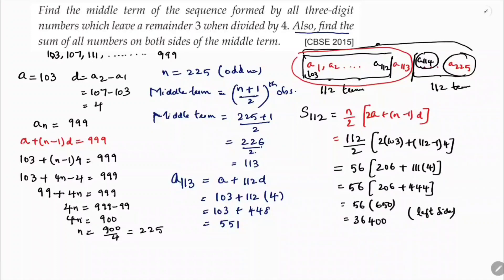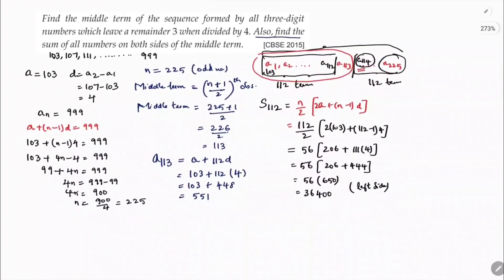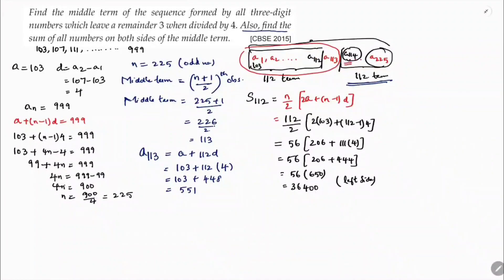Sum of terms on the right side = S₂₂₅ − S₁₁₃. For S₂₂₅: n/2 × [2a + (n−1)d] = 225/2 × [2×103 + (225−1)×4].